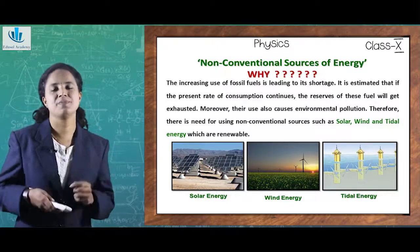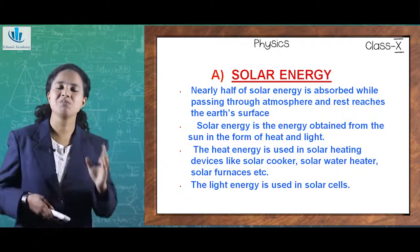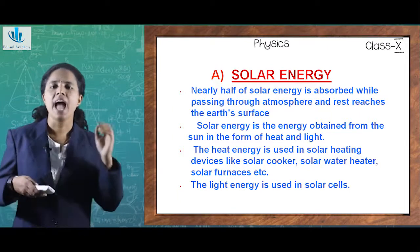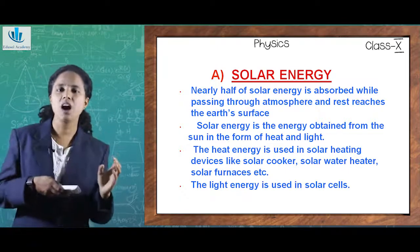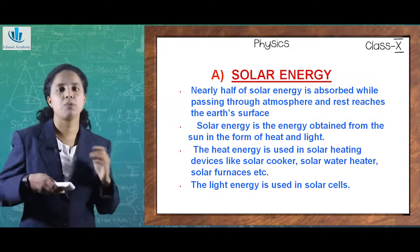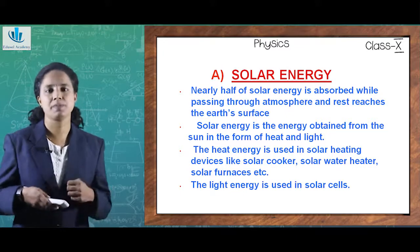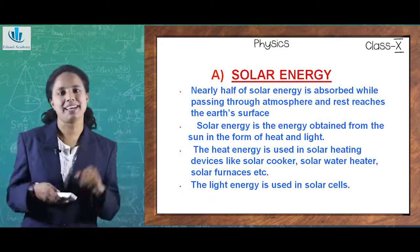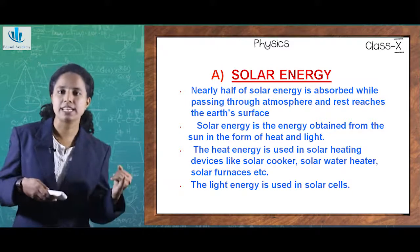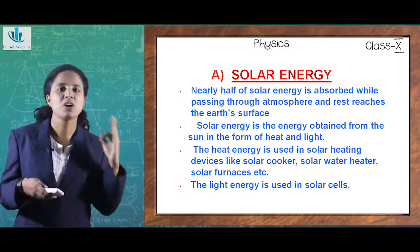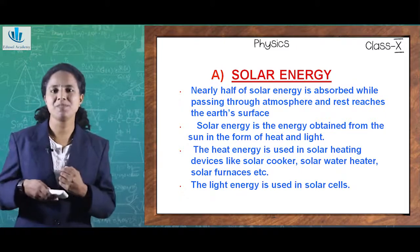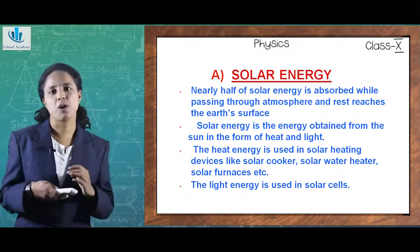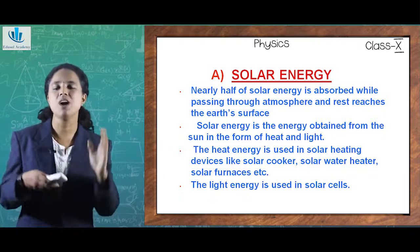The first and foremost non-conventional source of energy is solar energy — energy from the sun. Nearly half of solar energy is absorbed while passing through the atmosphere, and only the rest reaches Earth's surface. Solar energy can be of mainly two types: heat energy and light energy. Heat energy is mainly used in solar heating devices like solar cookers, solar water heaters, and solar furnaces. Light energy is used in solar cells or solar panels.